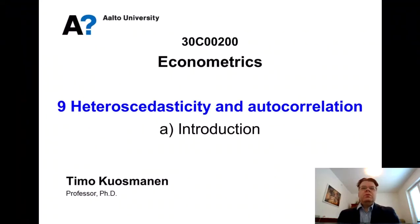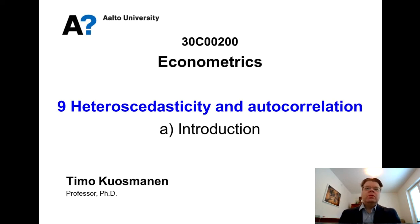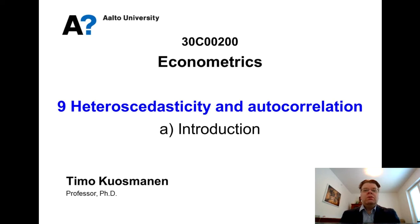In the previous two themes, we considered the endogeneity problem, which is a quite serious failure of the assumptions of the classical linear regression model. So in the following theme, we will look into two other types of failures, namely heteroscedasticity and autocorrelation. In this first video lesson, I will introduce you to the concepts of heteroscedasticity and autocorrelation and what kind of consequences there are for the statistical properties.